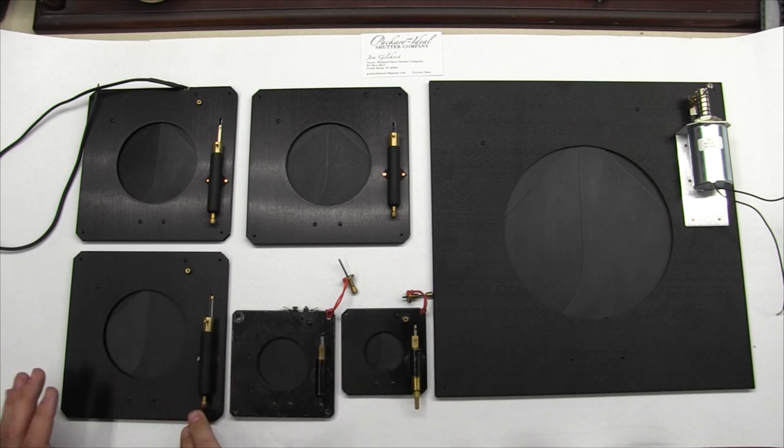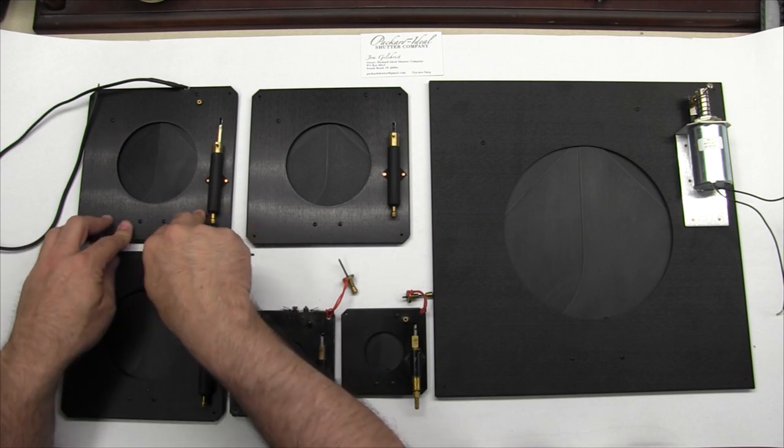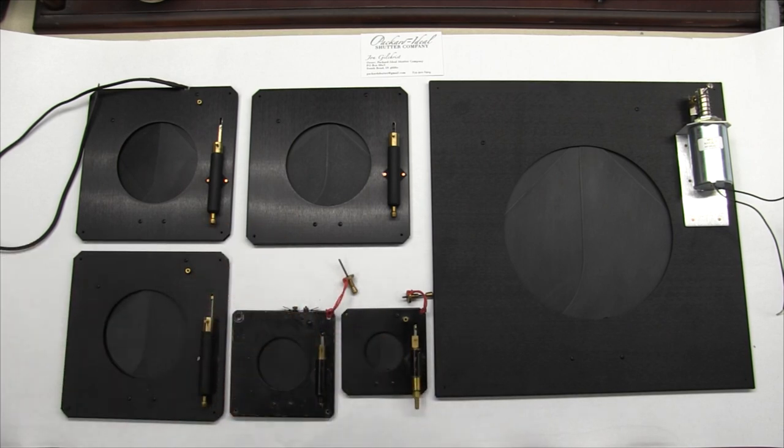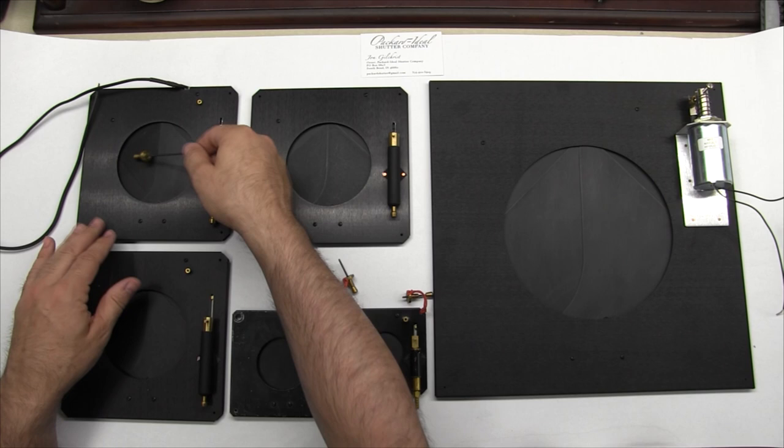So this is a number six three and a half inch. This is a three and a half inch number six synchro and because of the synchro and some geometry things that go on inside this one has metal blades. They are aluminum.